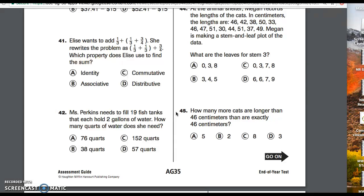42. Miss Perkins needs to fill 19 fish tanks that each hold two gallons of water. How many quarts of water does she need?